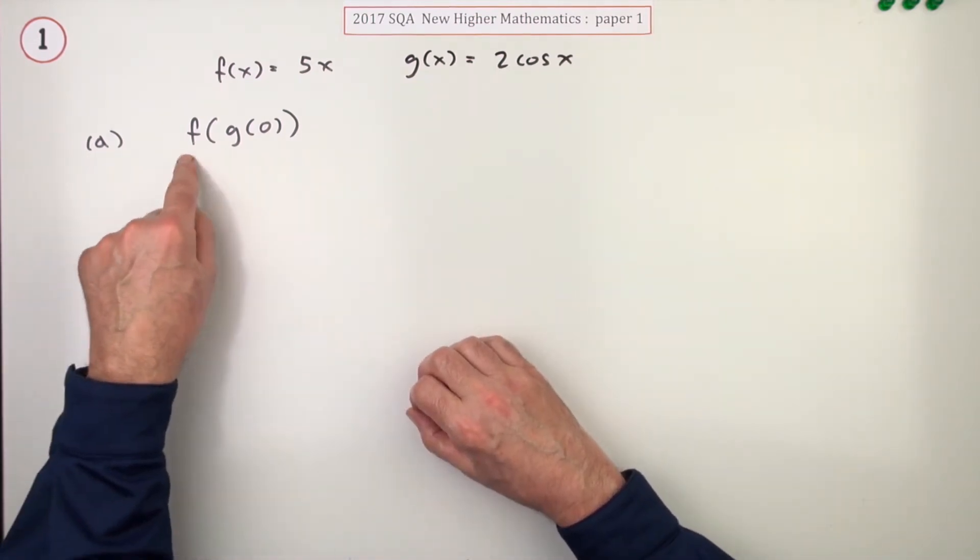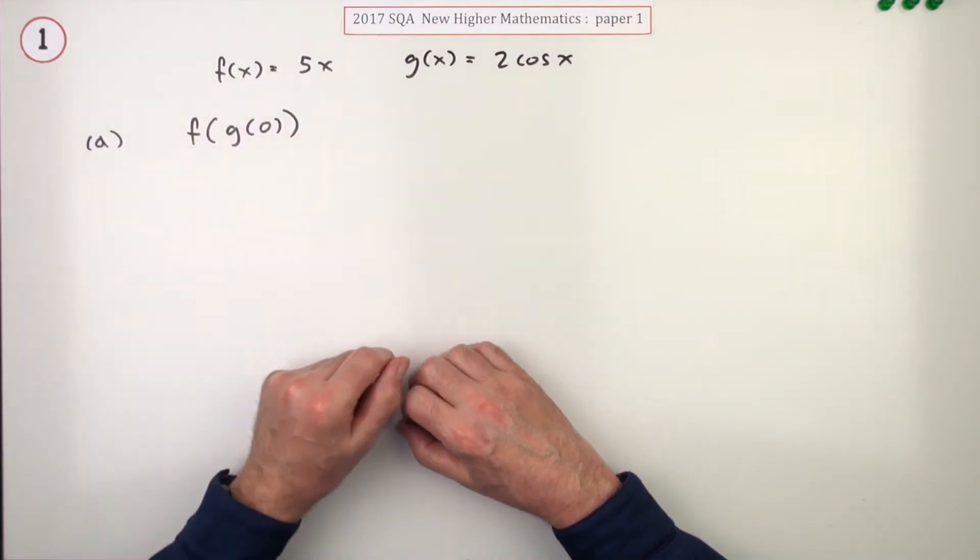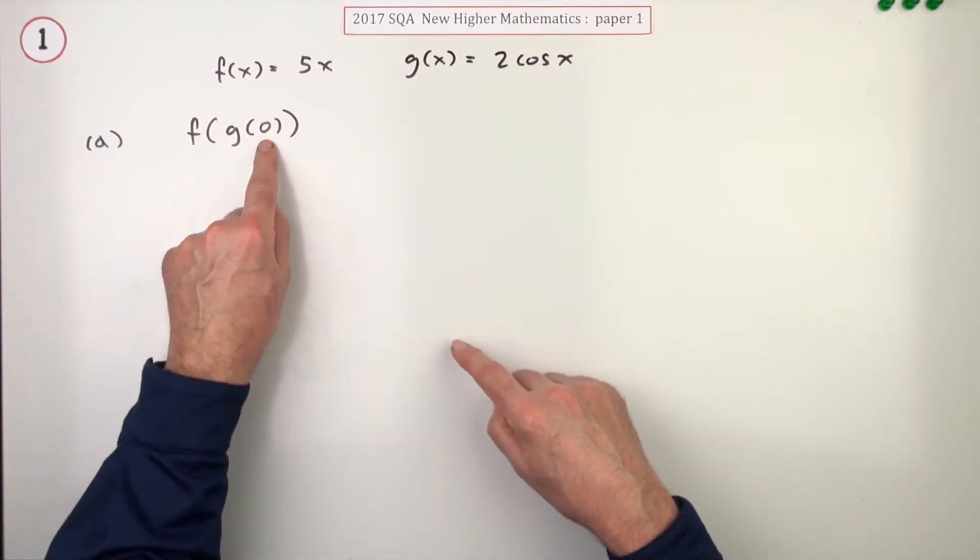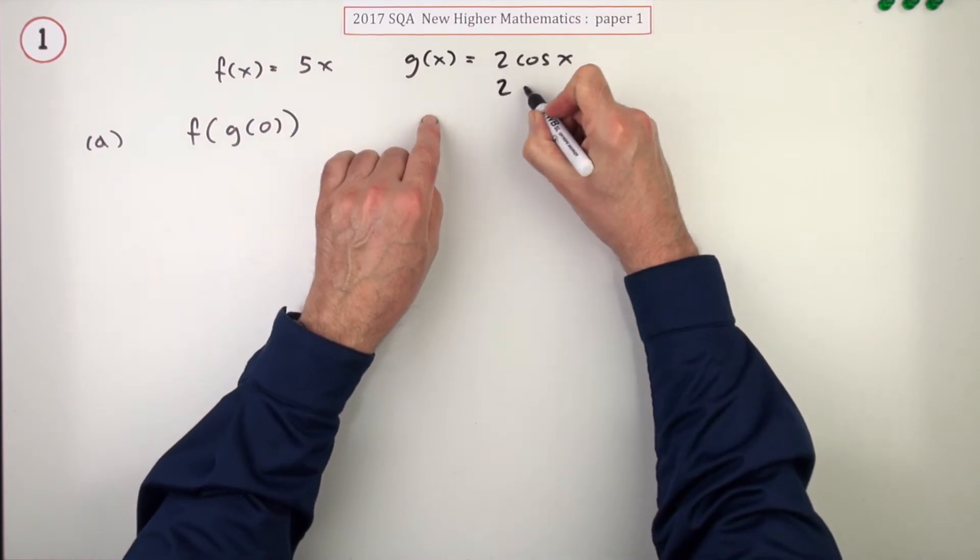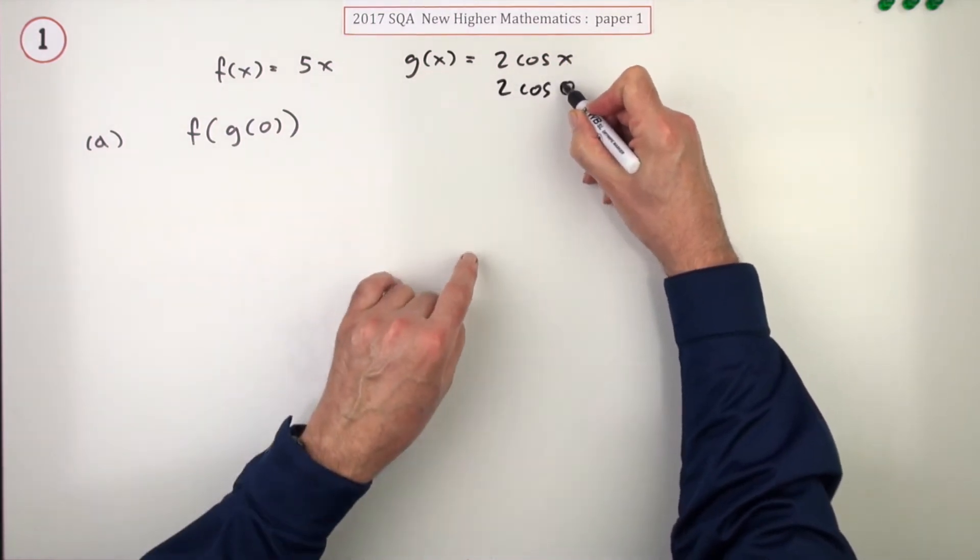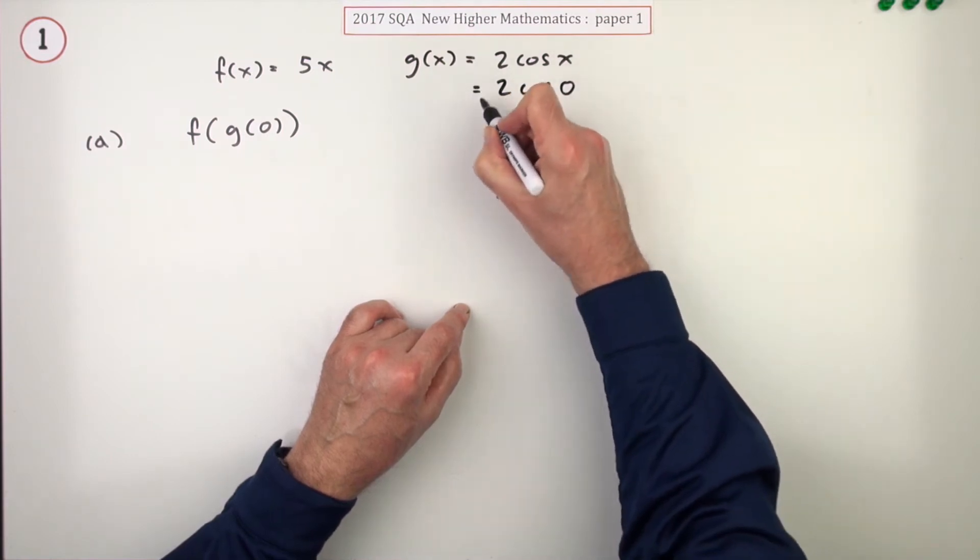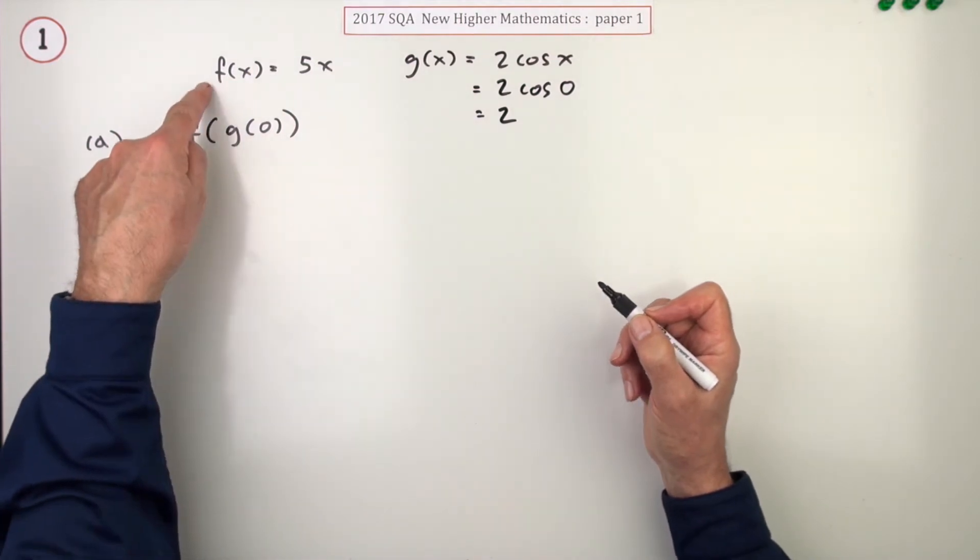However, what's f of g of zero? It's a composition of functions. In other words, g is worked out first. You give zero to g, so that means it'll take that zero and work out two times the cos of zero. The cos of zero is one, so that whole answer comes to two. It then feeds that answer to f.